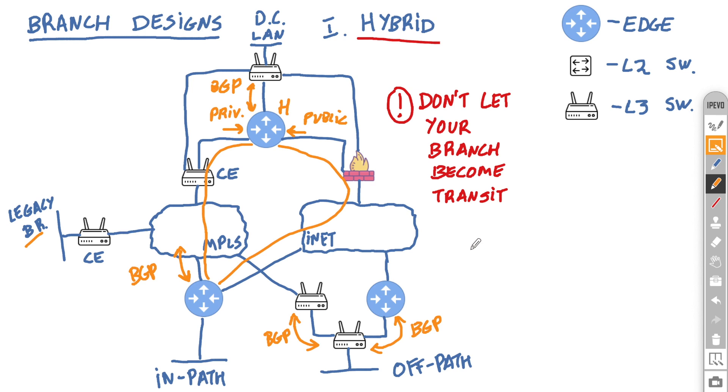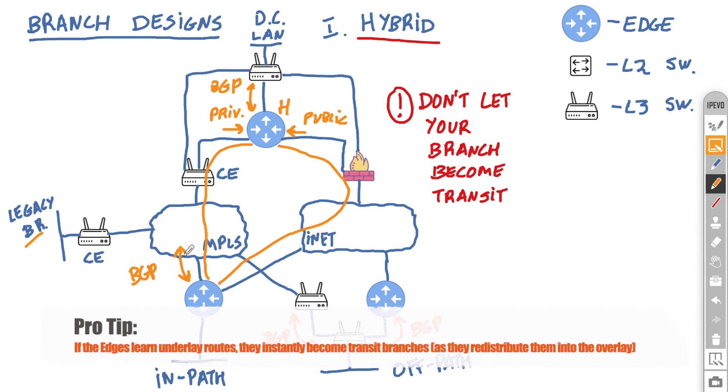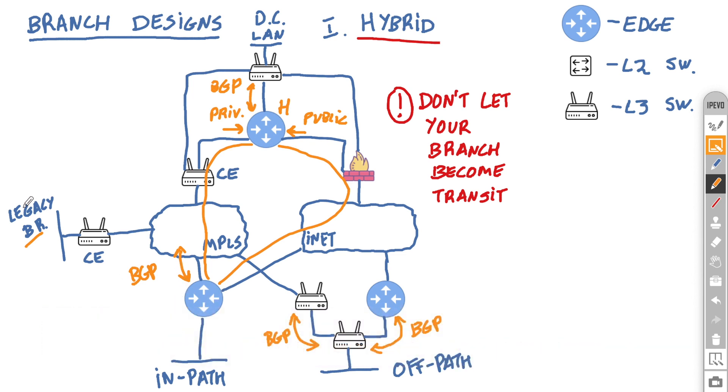Now when I said that a hybrid approach is a bit more challenging, it is because as opposed to traditional MPLS design, where every branch just advertises its own LANs and that's the ultimate destination for everybody else to reach the local area, in SD-WAN, there is always a redistribution happening between the underlay and the overlay. So what tends to happen, if you're not careful, is that this branch here, for example, can learn this prefix via the underlay, redistribute it in the same way that it will redistribute its own local area networks. And guess what? Everybody else will say, oh, if I want to reach my legacy site, well, I can also reach it via this branch here.